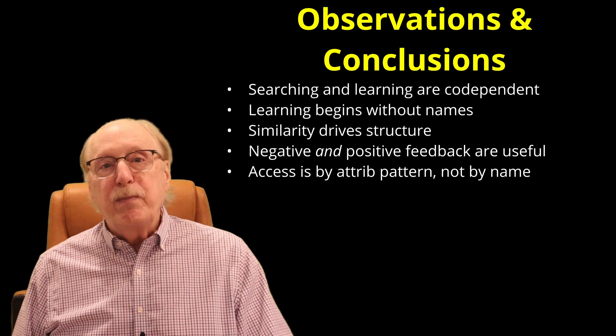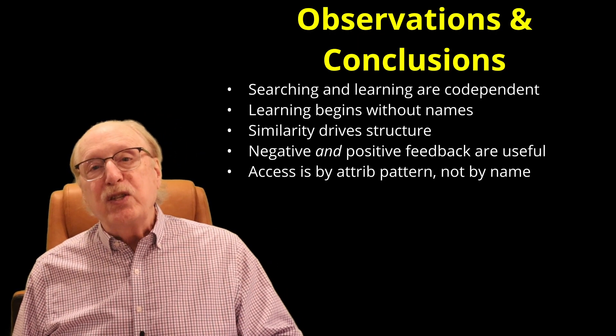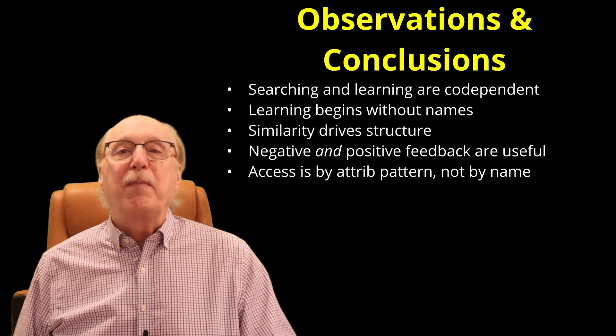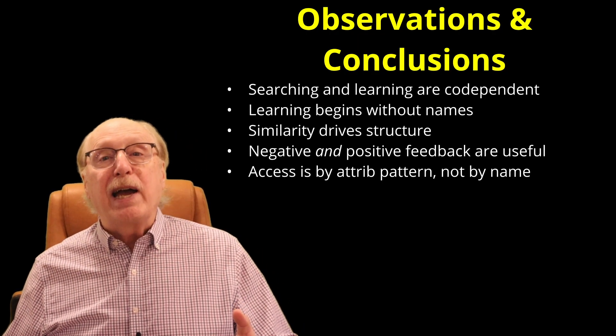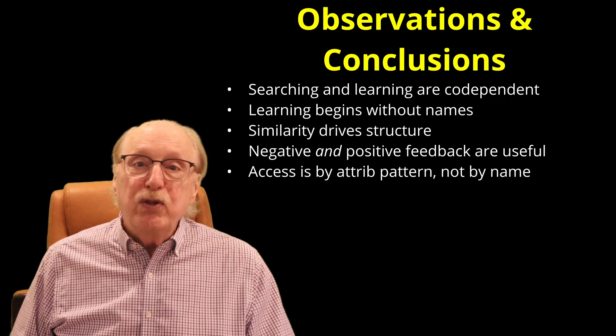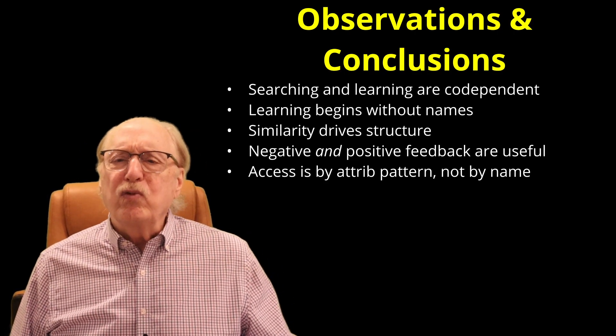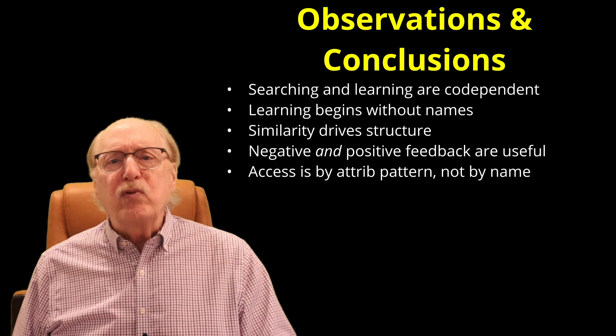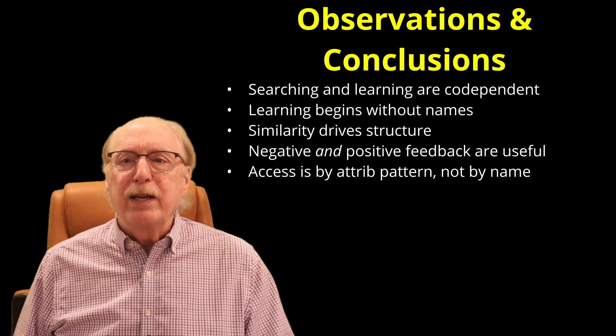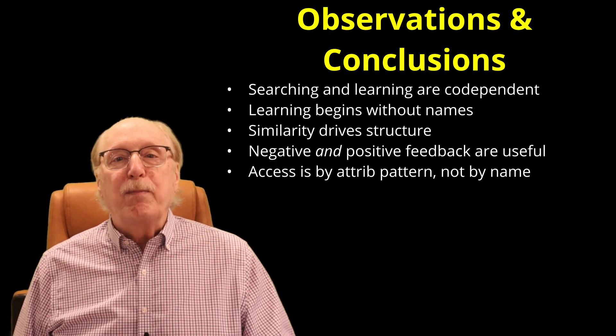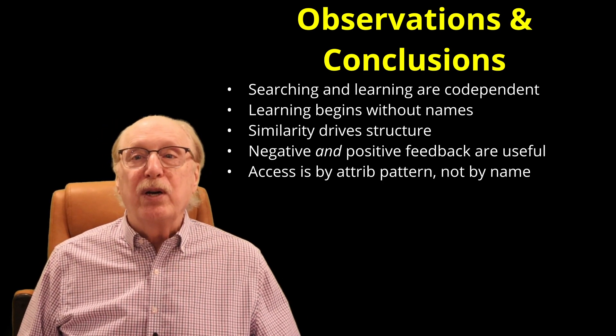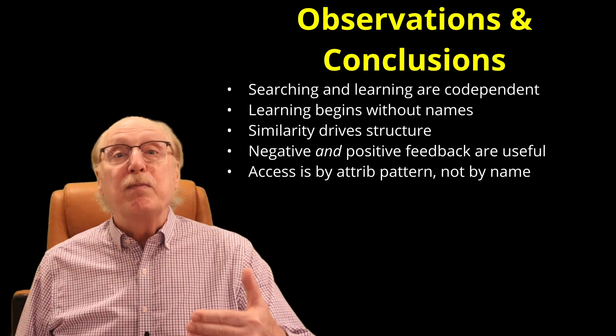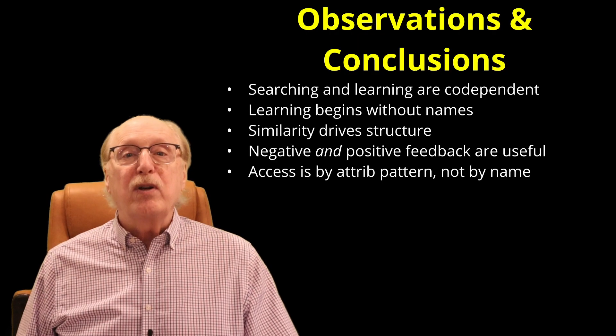And here's a biggie. Access is by pattern, not by name. In this demo, nodes are found through their attributes, not their labels. This mirrors human recognition. We don't retrieve dog by keyword, we retrieve it by pattern similarity. A fuzzy image, a bark, or even a sense of companionship can trigger the concept of dog. Recognition is emergent from the network, not a lookup operation.